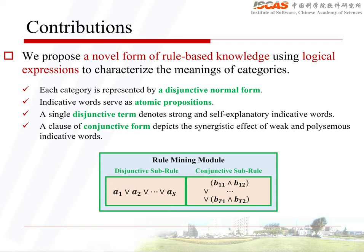In this work, we propose a novel form of rule-based knowledge using logical expressions to characterize the meaning of categories. The rule can be divided into two sub-rules: a disjunctive sub-rule and a conjunctive sub-rule. It takes automatically mined indicative words as atomic propositions. Specifically, each category can be represented by a disjunctive normal form.